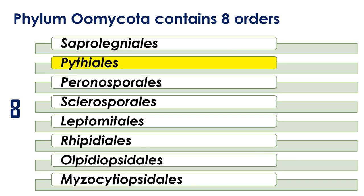As we discussed earlier, this phylum Oomycota contains 8 orders: Saprolegniales, Pythiales, Peronosporales, Leptomitales, Rhipidiales, Olpidiopsidales, and Myzocytiopsidales. We have already finished Saprolegniales. Now we are going to discuss Pythiales.